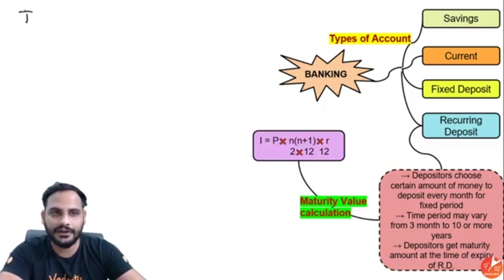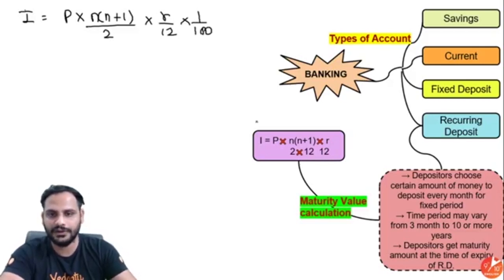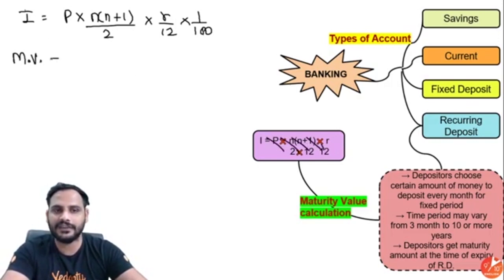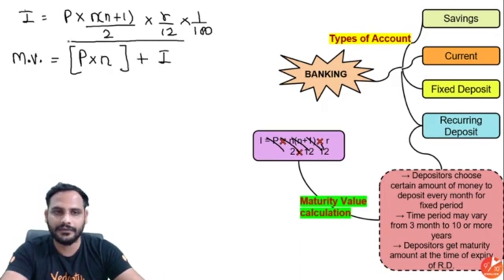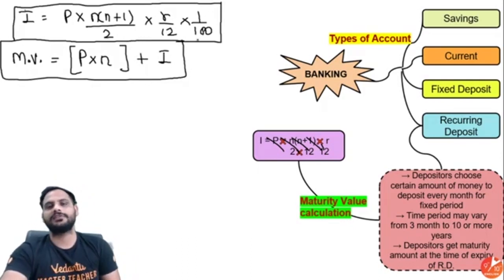For maturity value calculation, the interest formula is: I = P × n × (n+1) / 2 × r / 12 × 1/100. The maturity value is the total money the depositor gets, which equals P × n (total amount deposited) plus the interest. These are the only two important formulas in this chapter and all questions will be solved using them.